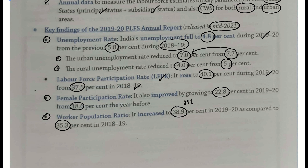Yeh saari increase hue hain. Kyunki yeh aankde inhonn sarkar ne release ki yeh report — 2019-20 ka yeh Periodic Labor Force annual report thi. Koi baat nahi, abhi aage ki dekhna jab aapko kisi current affairs ki compilation mein dekhegi — iske baad 2020-21 ki dekhenge, COVID waali.